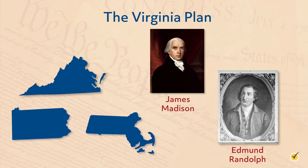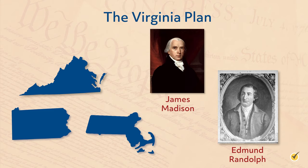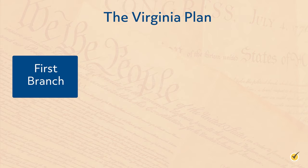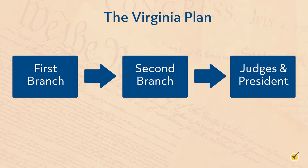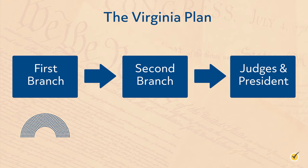The Virginia Plan proposed two legislative bodies and a system of courts to oversee legal matters. Power would flow from the first branch, which would select the second branch, and both would select the judges and the president. What made the plan controversial was that the number of members of the first branch — the future House of Representatives — was to be decided by the number of free men in each state. The question of how slaves should be considered in calculating representation for each state would lead to the infamous three-fifths compromise.